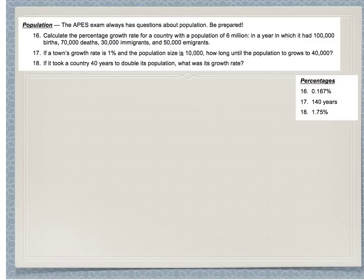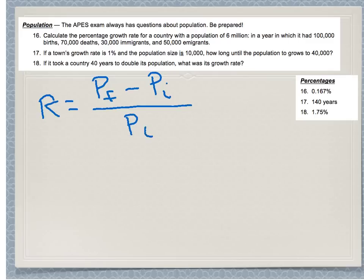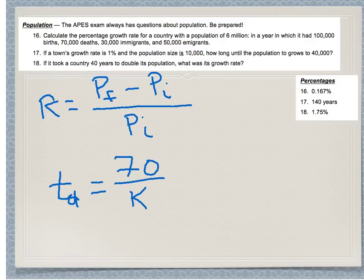Next topic: population. You'll need some equations, so let me write those down. The population growth rate equals the final population minus the initial population, divided by the initial population: rate = (P_final − P_initial) / P_initial. Another very handy equation is doubling time — the time it takes to double equals 70 divided by the growth rate K. These are the two equations you should jot down.